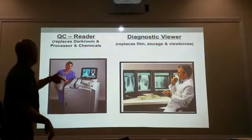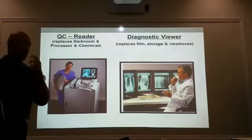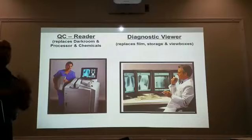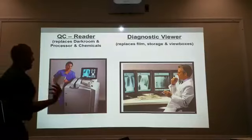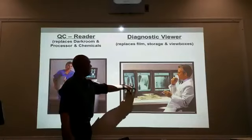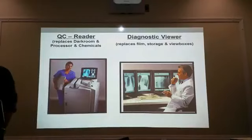Different types of readers are available. The reader is going to replace the darkroom and processor. We're thinking about cutting our darkroom in half for film, so we can utilize the other half for something else — it gives us back our space. Instead of view boxes, we now have our diagnostic viewers, and it removes a lot of clutter and extra space.